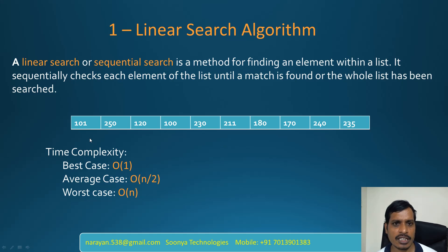First we will check student ID 230 with the first item, 101. 230 equals 101? No, then it will go to the next item. 230 equals 250? No. 230 equals 120? No. 230 equals 100? No. Then it will go to the next item. 230 equals 230? Yes, then the student was selected.